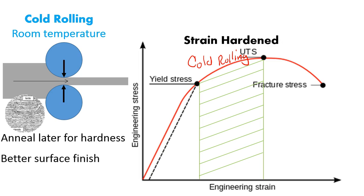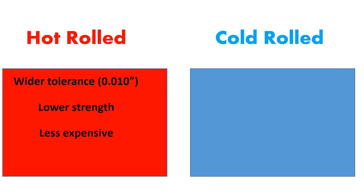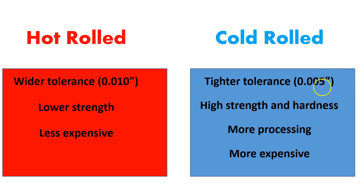Some benefits of cold rolling: it's stronger than hot rolling, more precise, and has a better surface finish. It is about twice as expensive and does need to be annealed later to control hardness. To summarize: hot rolling has wider tolerances — about ten thousandths — lower strength, and is less expensive. Cold rolling has tighter tolerances — about five thousandths — high strength and high hardness, but requires more processing and is a more expensive process.